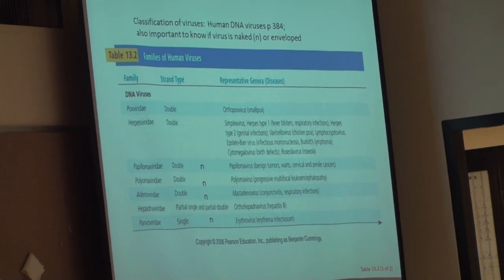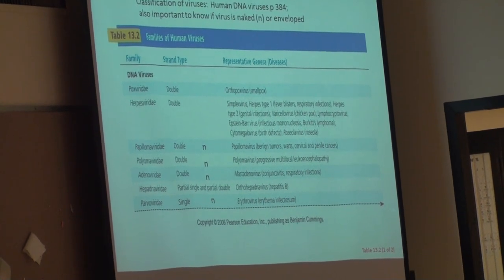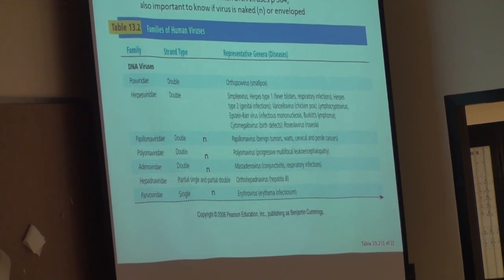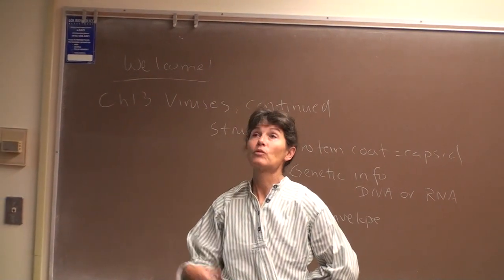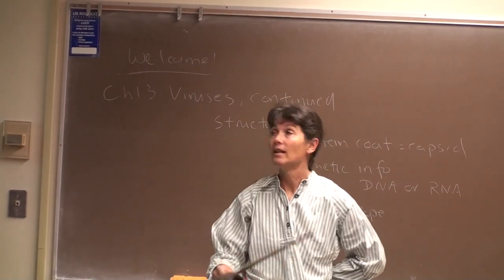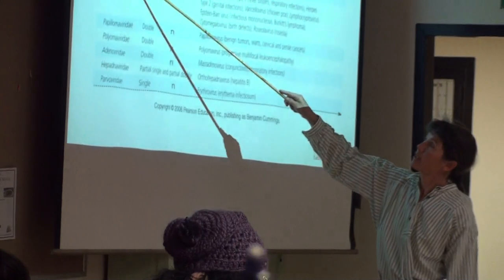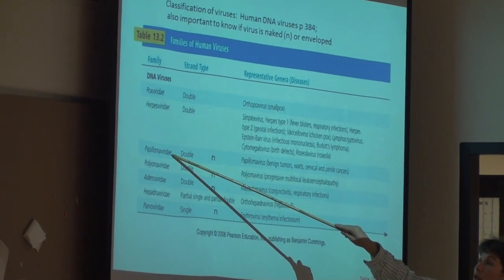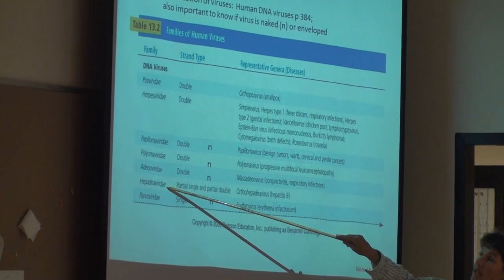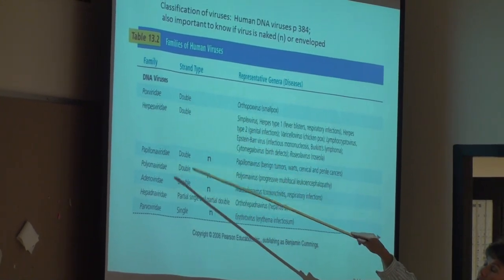We will be talking about specific animal and human DNA and RNA viruses. For the exam, I'd like you to know: are they DNA viruses or RNA viruses, and with regard to structure, are they naked or enveloped viruses? We won't cover all viral families, but we'll discuss the poxvirus family, herpesvirus family, papillomavirus family (responsible for warts), and the hepatitis B virus family. These are all DNA virus families.